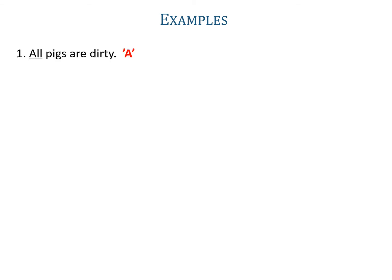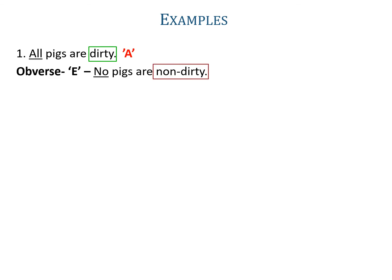Example one: 'All pigs are dirty.' Here the word all is used, so it is an A-proposition. The obverse of A is E, because both have the same quantity but different quality. The predicate of the given proposition is dirty, its complementary will be non-dirty. The symbolic form of E-proposition is 'no S is non-P', so the obverse is 'no pigs are non-dirty'.